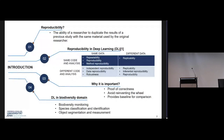We'll dive into the introduction first. In general, reproducibility is the ability of a researcher to duplicate the results of a previous study with the same material used by the original researcher. When it comes to deep learning, we could find various definitions according to the data or the code used during the reproducibility study. The word reproducibility could interchangeably be used with repeatability and replicability. Here I refer to reproducibility as the ability to duplicate the results using the same data and the same code and analysis.